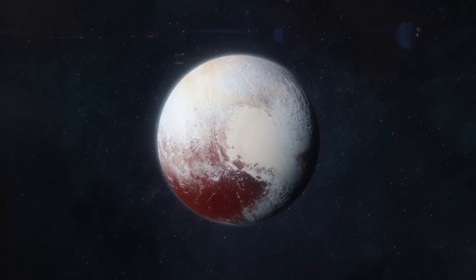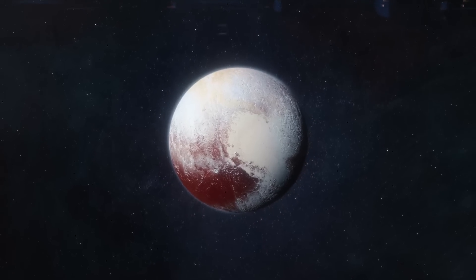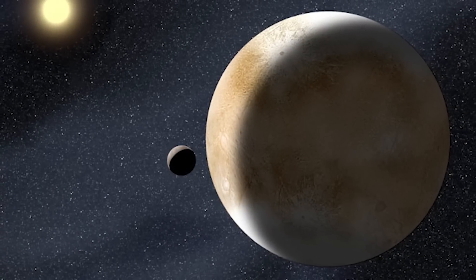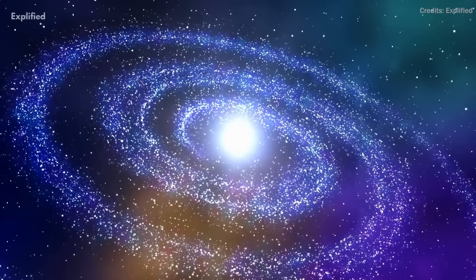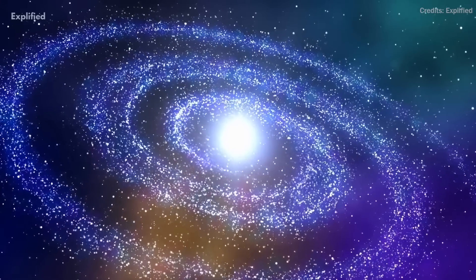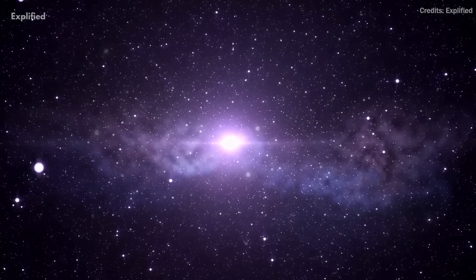Caltech astronomer Michael Brown announced the discovery of a new planet that is larger and farther away than Pluto. The new object, dubbed 2003 UB313, is the solar system's farthest directly observed body and the fourth brightest Kuiper Belt object.